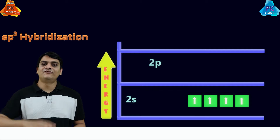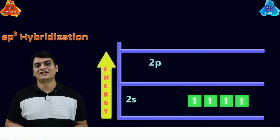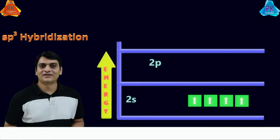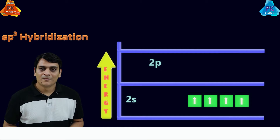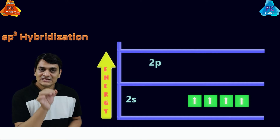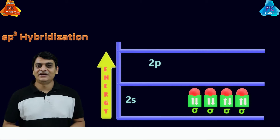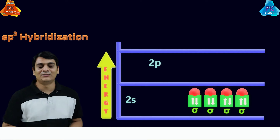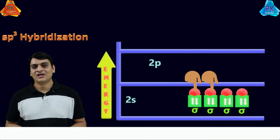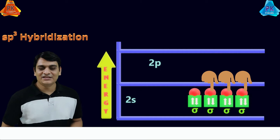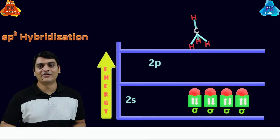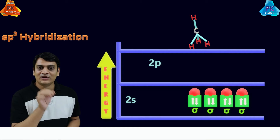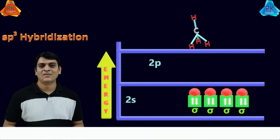The 4 hybrid orbitals each contain a single electron. They will overlap with hydrogen atoms to form 4 sigma bonds, because CH4 has 4 hydrogen atoms, as you can see here.